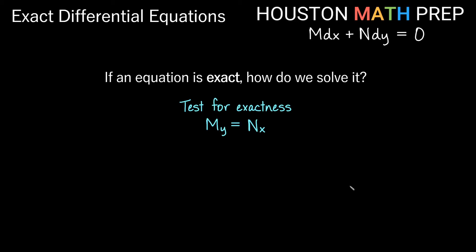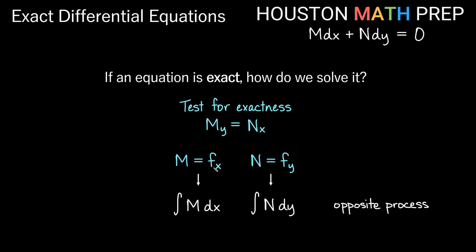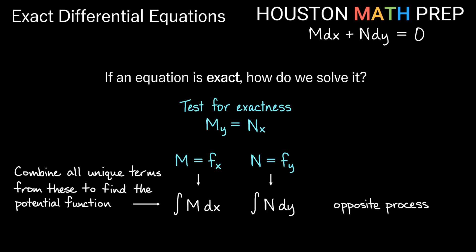If our equation is exact — it passes our test for exactness — what do we do to solve it? Remember that M is partial fx and N is partial fy for some function. So we need to undo the processes that produced M and N: integrate M with respect to x, and integrate N with respect to y. If you did this in Calculus 3, this was about finding something called the potential function. We combine all of the unique terms from both antiderivatives into our solution, and that gives us the answer for our exact differential equation.